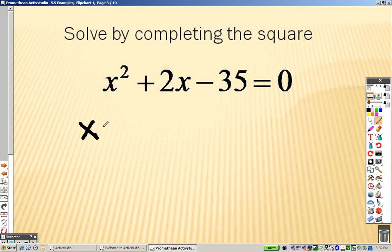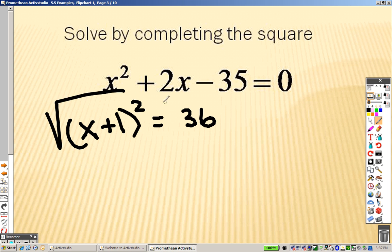So what does that mean? Here's the actual problem to solve now. x plus 1 squared equals 36. So we square root both sides to get x plus 1 equals plus or minus, and what is the square root of 36? That is 6.